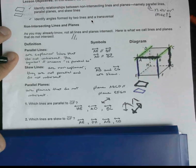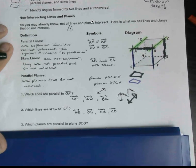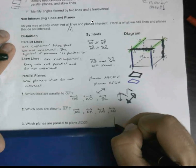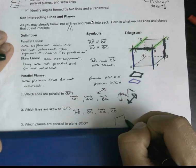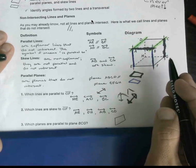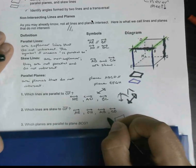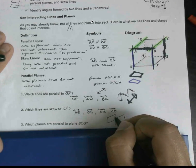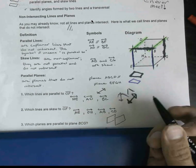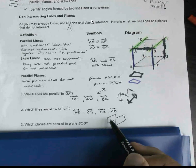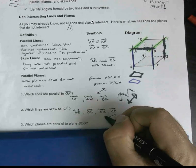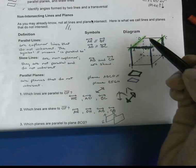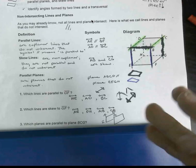Which planes are parallel to plane BCG? I know that BCG is kind of holding down this right wall here. So a plane that's going to run parallel to that across the way—what's this plane to the left? It's going to be ADEH. Notice it's right there, it's parallel to it. They're kind of sandwiched away from each other.